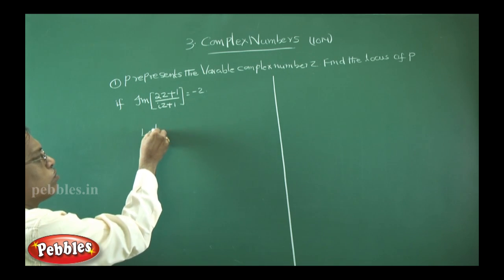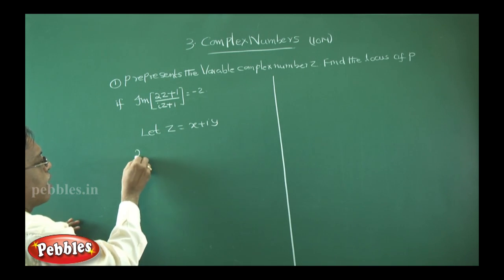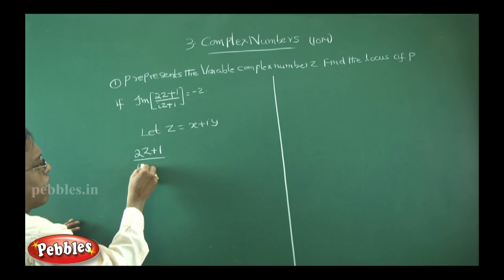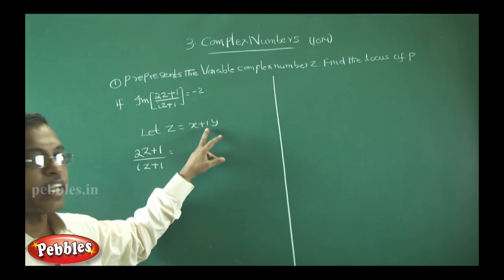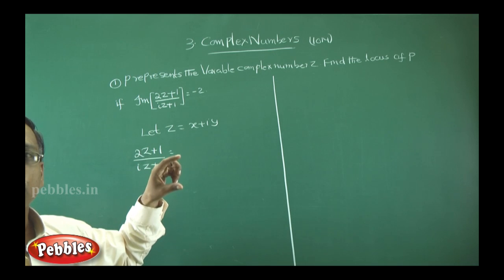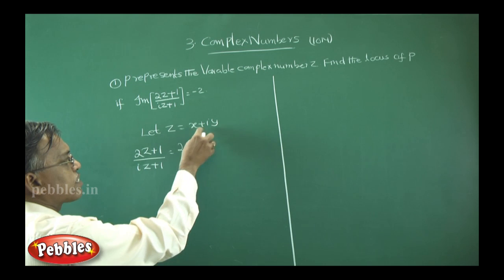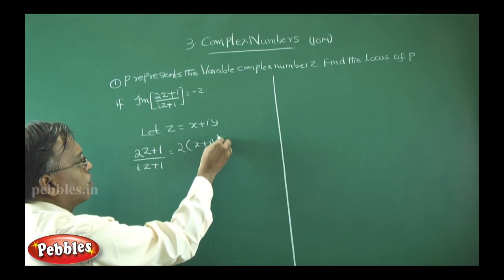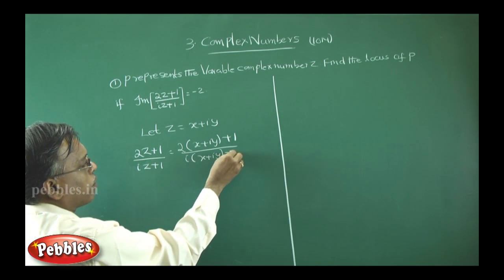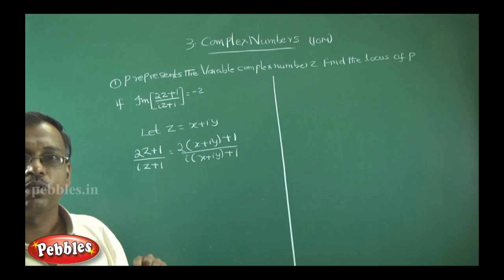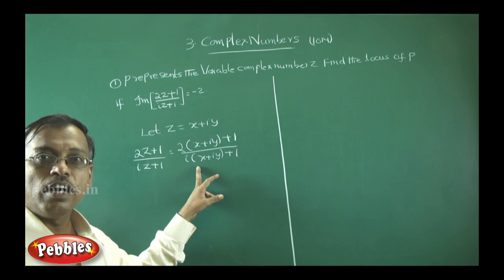Let z = x + iy. We will consider (2z + 1) / (iz + 1). In place of z, substitute x + iy: that gives 2(x + iy) + 1 divided by i(x + iy) + 1. Arrange the numerator and denominator in complex number form.